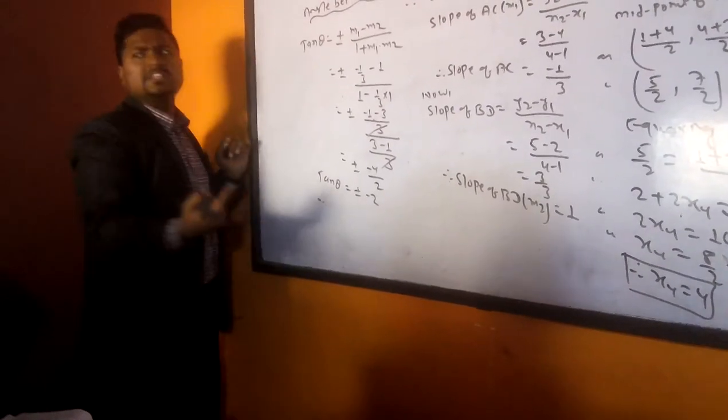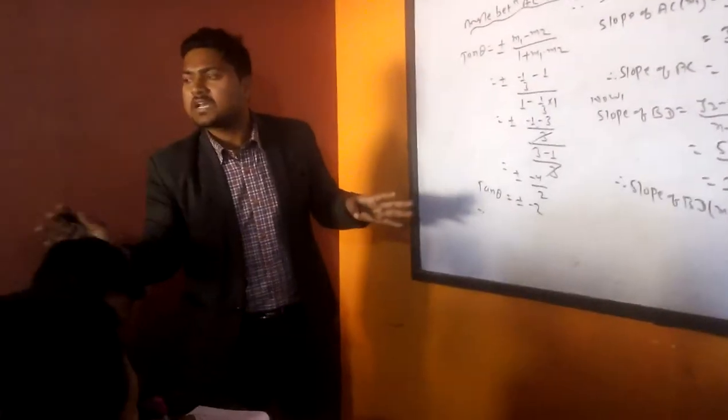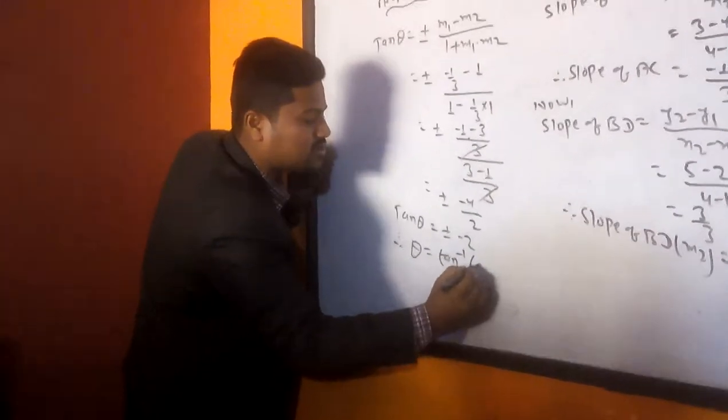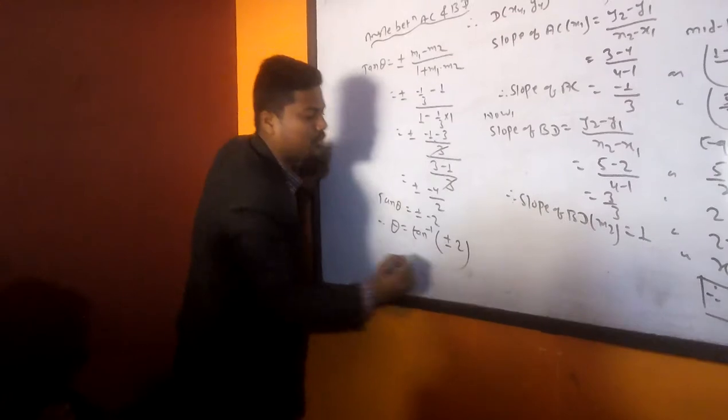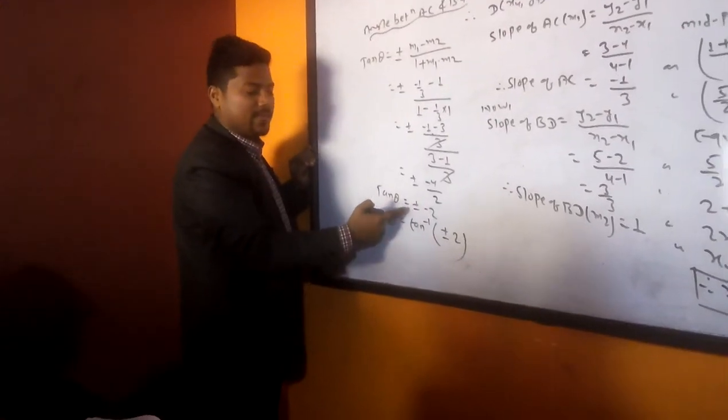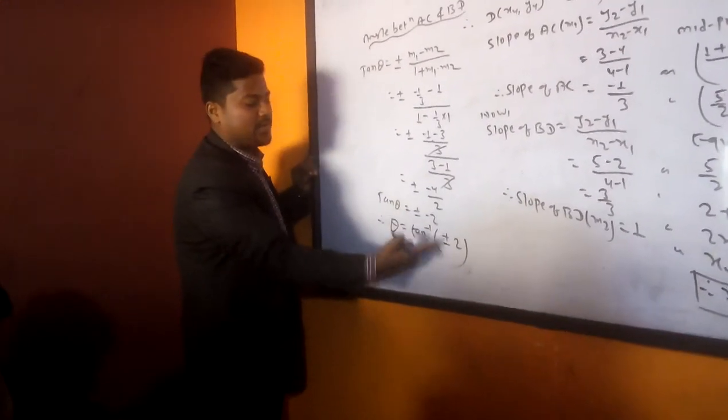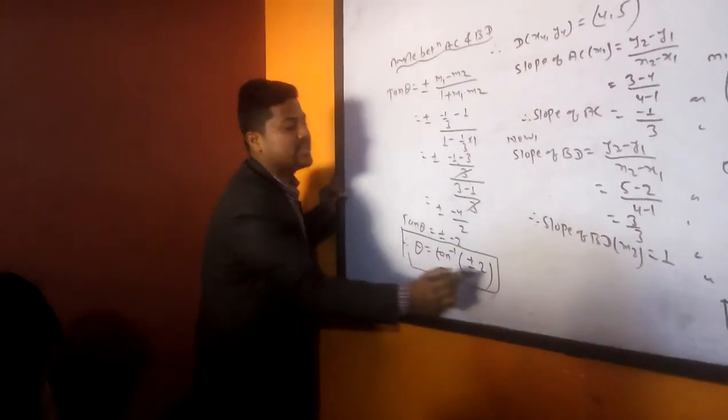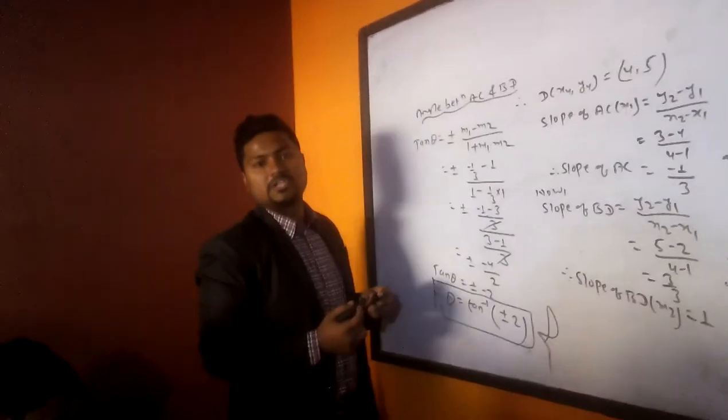Tan theta equals 2. Therefore we can write, 2 is not a standard value. Therefore theta equals tan inverse plus minus 2. We can write because taking positive then minus come, taking negative then plus come. So plus minus 2. So this is the angle between diagonal AC and BD. And this is our final answer.